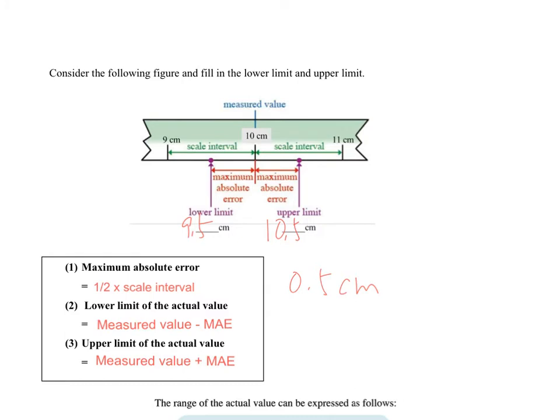So how can we find out the lower limit of the actual value? Here, 9.5 would be our actual value. How can we come it up? It should be 10 minus 0.5, so that we can have the 9.5, right? So that's why we will have the measured value, which is 10, and then MAE, which is maximum absolute error, which is our 0.5 before. That's why we can have the 9.5 here. Same case with the upper limit, 10 plus 0.5.